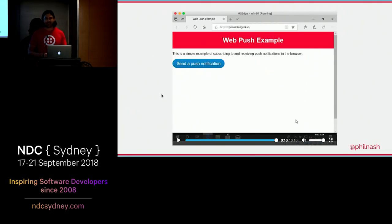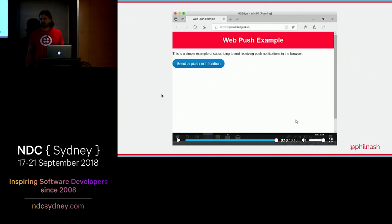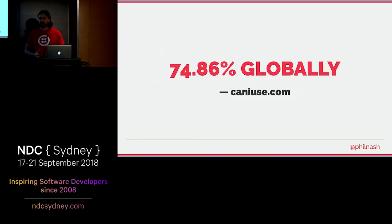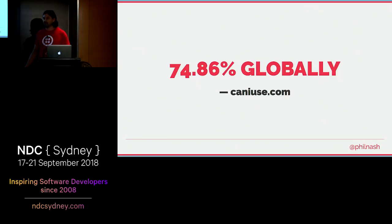Safari did implement a push notification style thing in Safari for the desktop, which uses the existing iOS APNS push notification service. But that doesn't work on iOS devices and is entirely non-standard, so I like to ignore it. With that amount of browser support, looking at caniuse.com with their global statistics, it's almost three-quarters of users who can receive push notifications on their devices or laptops. So this is definitely not a feature we should be ignoring because Safari is not involved.